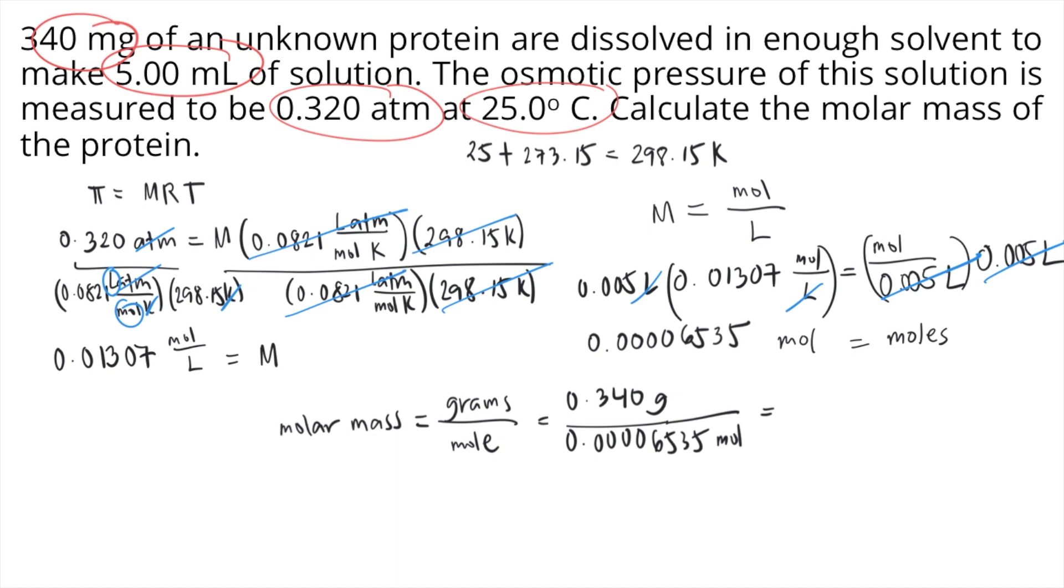you will get the answer 5,202.75 and the unit is grams per mole. So you might be wondering, why is the molar mass so large? Because the given is an unknown protein. And proteins are known to have big molar masses. So don't find it unusual.